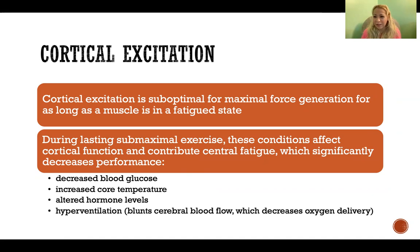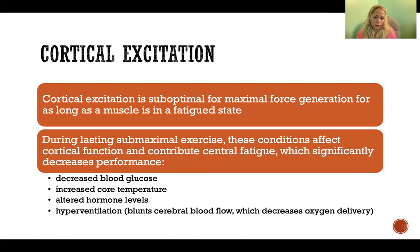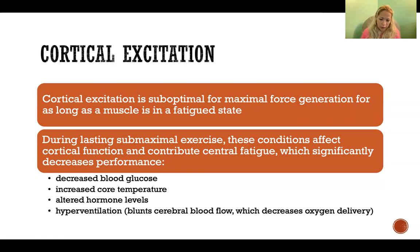This implies there is feedback coming back from afferent neurons — from the muscle spindles and other receptors — sending information from the periphery up to the brain so that the brain knows the muscle is still in a fatigued state and should not send output to generate maximal force. During lasting submaximal exercise, these conditions affect cortical function and contribute to central fatigue, which significantly decreases performance.